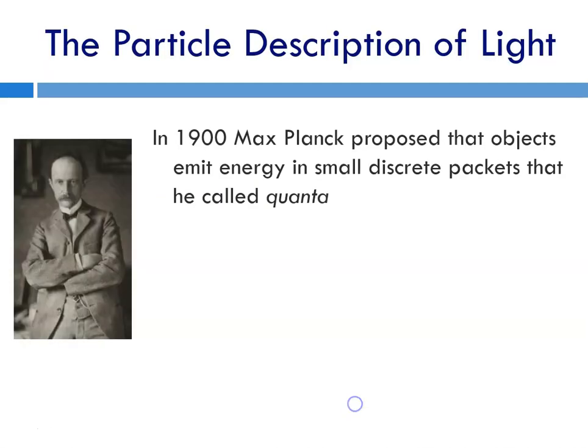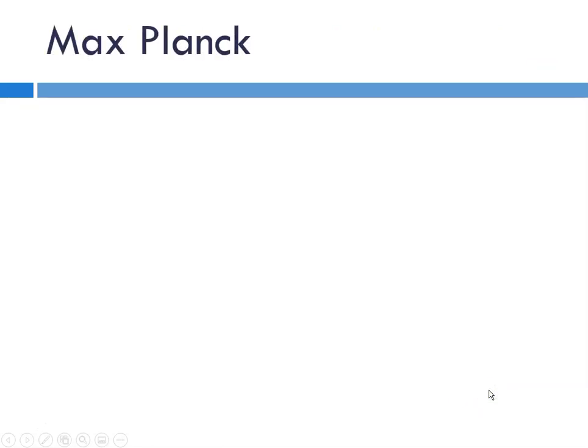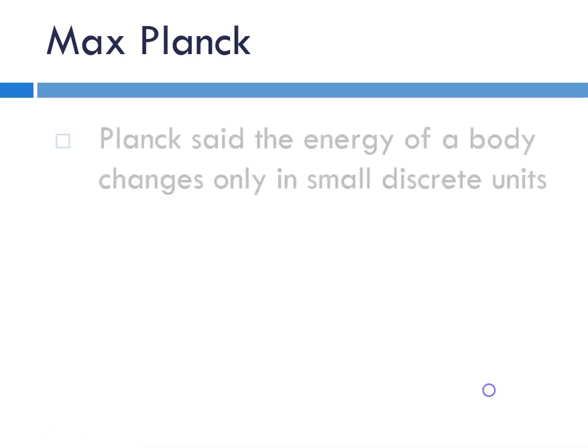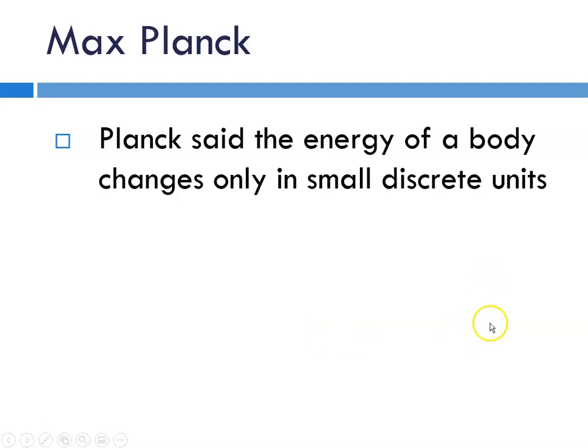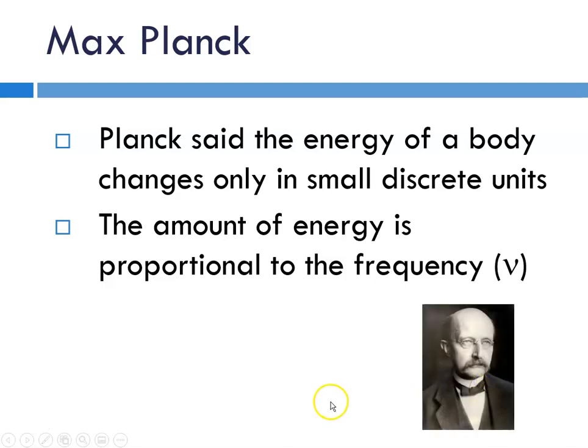This fellow, Max Planck, proposed that objects emit energy in small discrete packets that he called quanta. A quantum of energy is the minimum quantity of energy that can be gained or lost by an atom. He proposed the following relationship: that E, the energy, is equal to some constant times the frequency. He was trying to explain this photoelectric effect. He said that the energy of a body changes only in small discrete units. The amount of energy is directly proportional to the frequency.